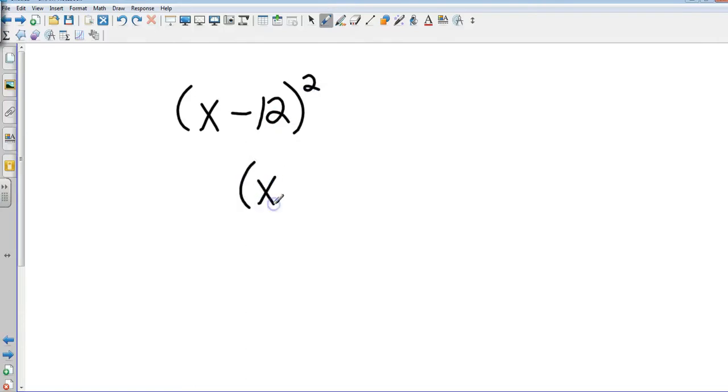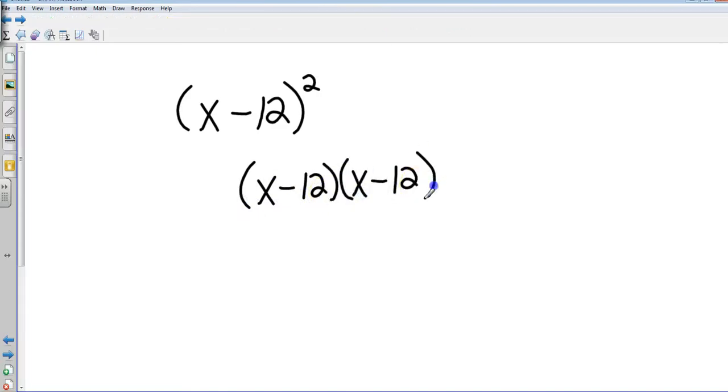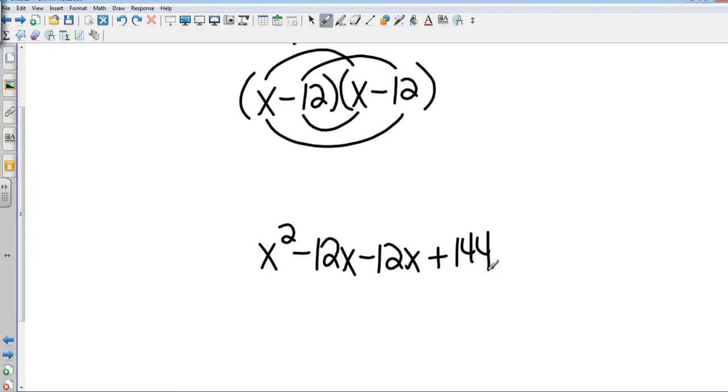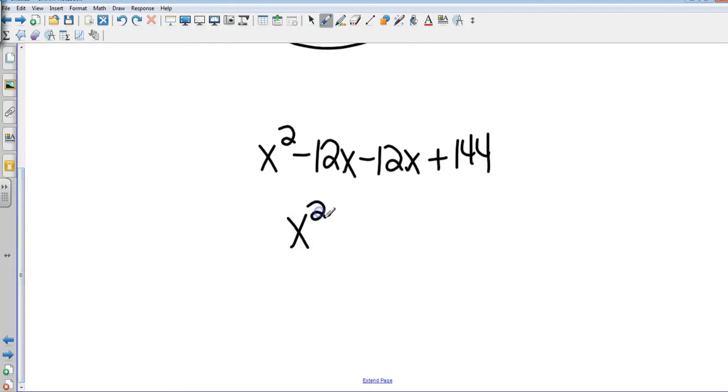And we're back. That's going to be x minus 12 times x minus 12. First terms. Outside terms. Inside terms. And last terms. That's going to leave me with x squared minus 24x plus 144.